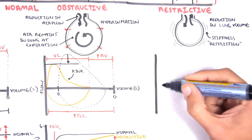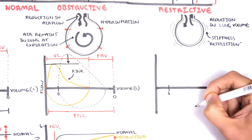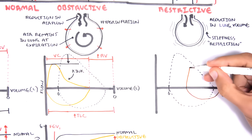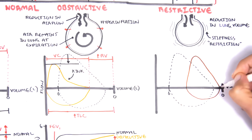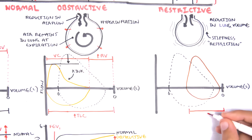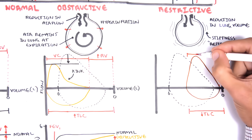Let's look at forced vital capacity using a graph again. The dotted black line represents normal forced vital capacity — the largest amount of air that can be expired after a maximal inspiratory effort. Here in brown is the pattern seen in restrictive lung disease. As you can see, it has shifted to the right. The reason for this shift is that the total lung capacity has reduced due to the restrictive lung changes, the residual volume has reduced, and so the forced vital capacity is reduced.